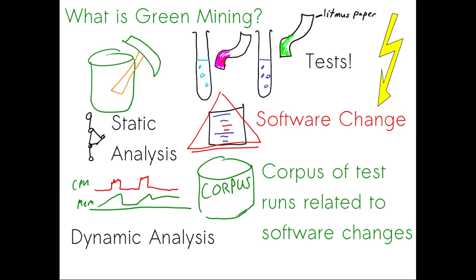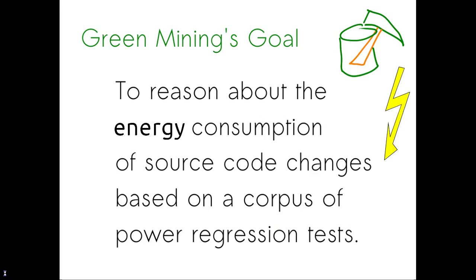This work is situated within the context of green mining. Green mining takes things like static analysis, dynamic analysis, tests, power measurements, and software changes, and integrates them into a corpus that relates all of these different kinds of tests and measurements with actual software changes. The intent is to reason about the energy consumption of source code changes based upon this corpus of power and energy regression tests.